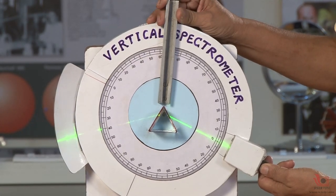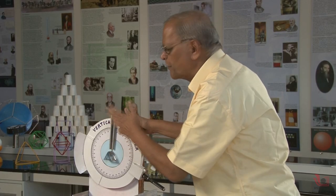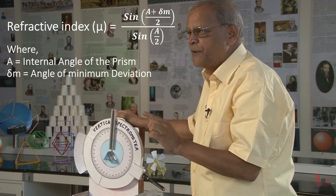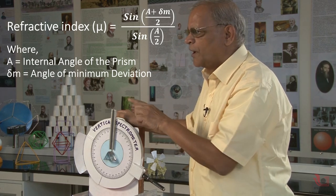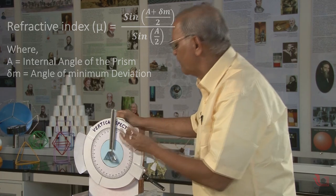If I can measure the angle of minimum deviation directly, I can calculate mu—the refractive index of the prism. Refractive index mu is given by a simple formula: mu equals sin((A + δₘ)/2) divided by sin(A/2). This is a simple way of finding the mu of the prism.